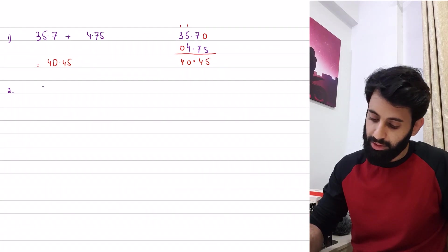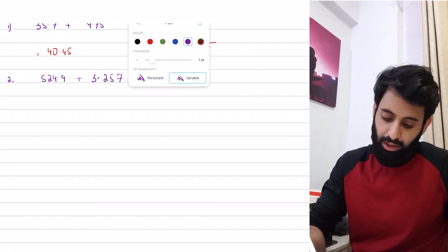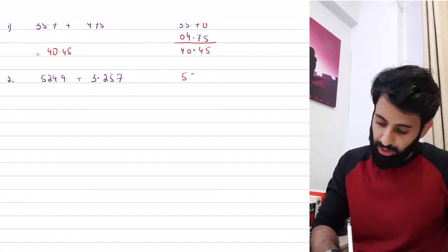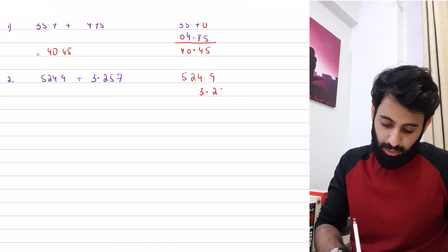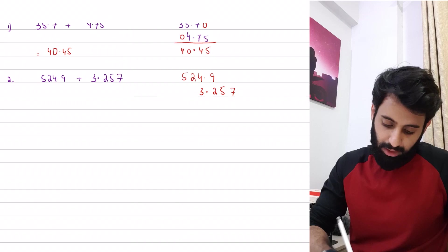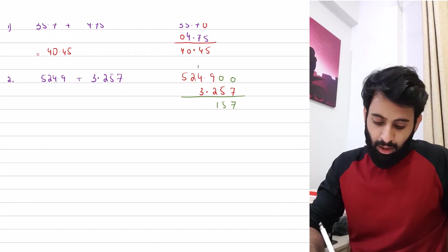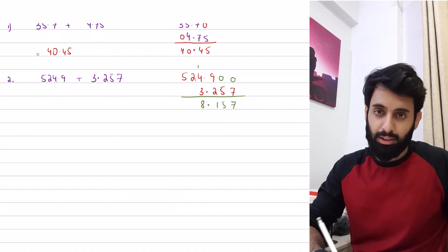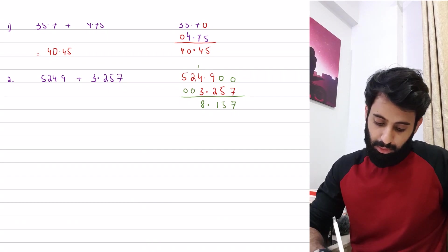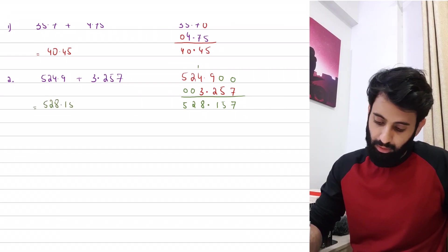Example two: 524.9 plus 3.257. I'll write 524.9 first, then 3.257 aligned so the decimals line up, and fill missing places with 0. So 0 plus 7 is 7; 0 plus 5 is 5; 9 plus 2 is 11, carry the 1; 4 plus 1 is 5, 5 plus 3 is 8. Bring the decimal straight down, then 2 plus 0 is 2 and 5 plus 0 is 5. The final answer is 528.157.